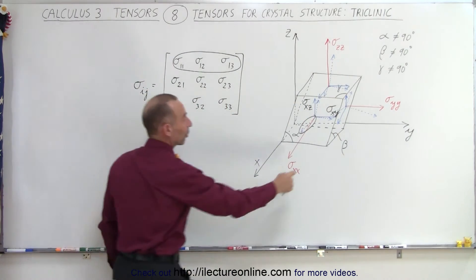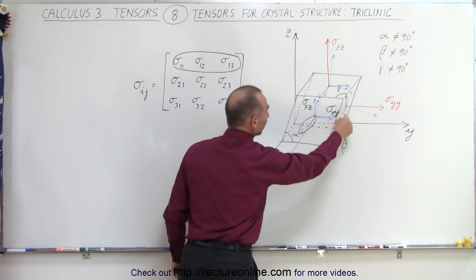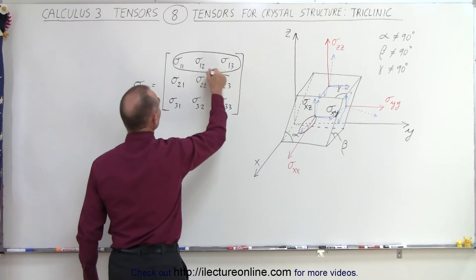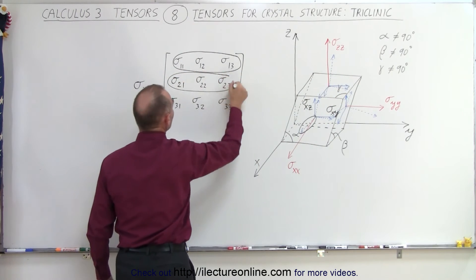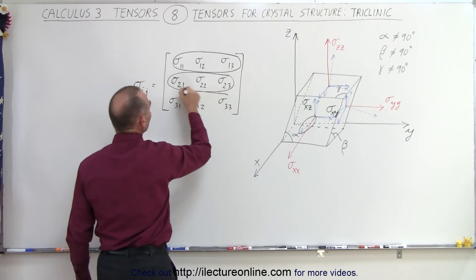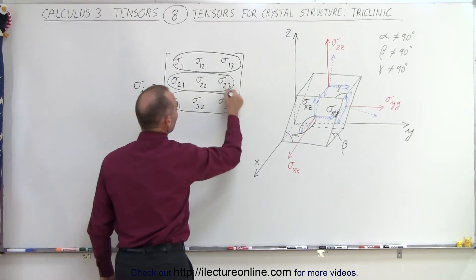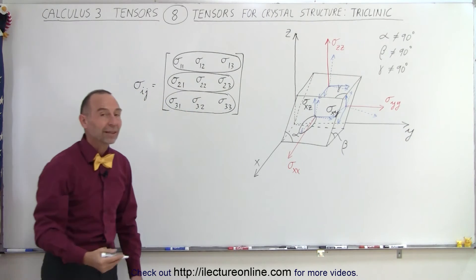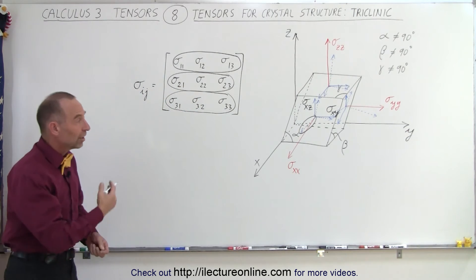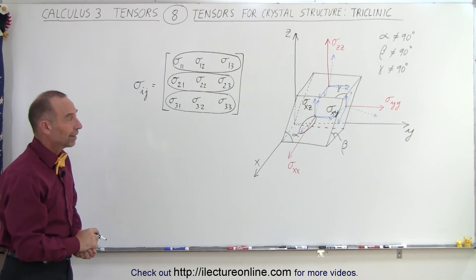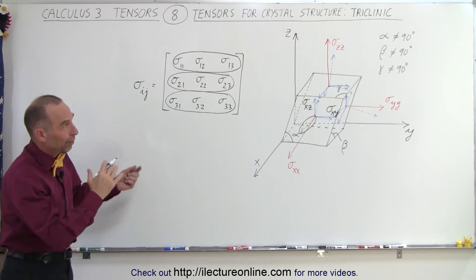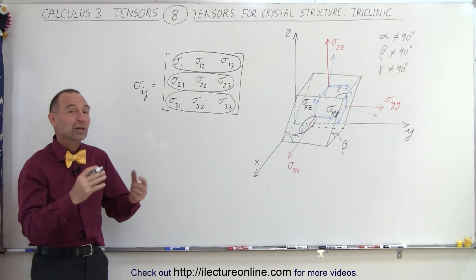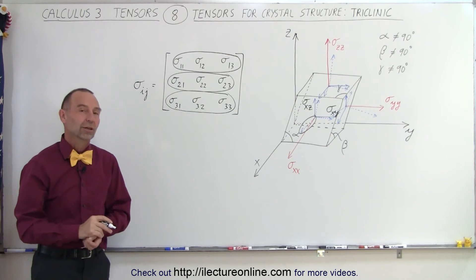The same applies for this surface and that surface — you would need these three vectors for each. That's why we can represent this in tensor notation, using a dyad to represent what we call a triclinic structure.